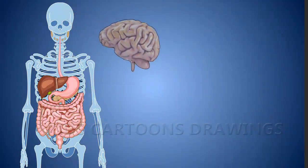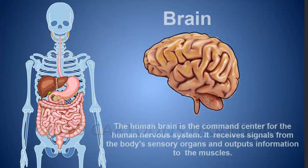Brain: The human brain is the command center for the human nervous system. It receives signals from the body's sensory organs and outputs information to the muscles.